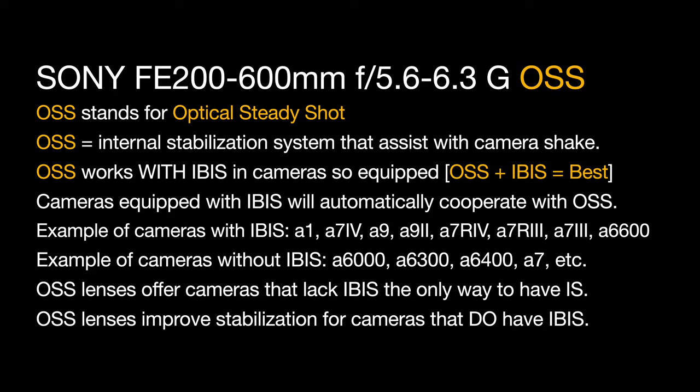Examples of cameras with IBIS are the Alpha 1, the A7-4, the A9, A9-2, A7-R4, A7-R3, A7-3, and A6600. Examples of cameras without IBIS would be the A6100, the A6300, A6400, A7, etc. OSS lenses offer cameras that lack IBIS the only way to have image stabilization, so it's really a valuable thing. And remember, OSS lenses improve stabilization for cameras that do have IBIS.